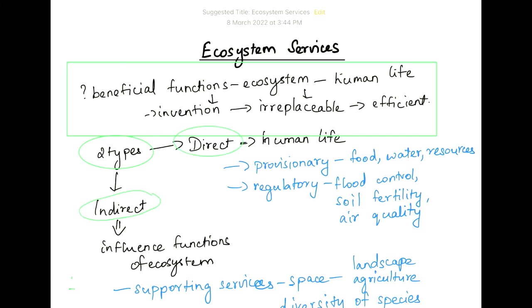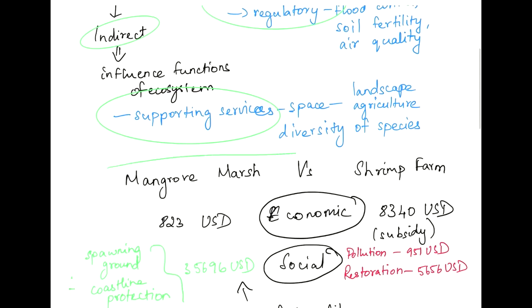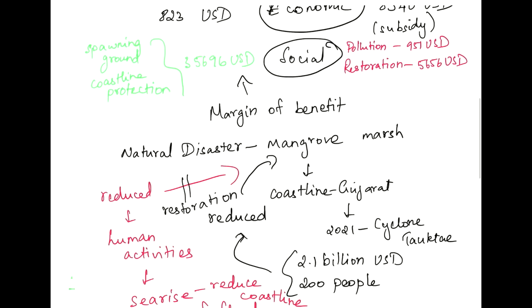And we provided examples for direct services and indirect services. And we compared mangrove marsh or natural ecosystem service with shrimp farm, and found that the margin of benefit is more in the ecosystem service.